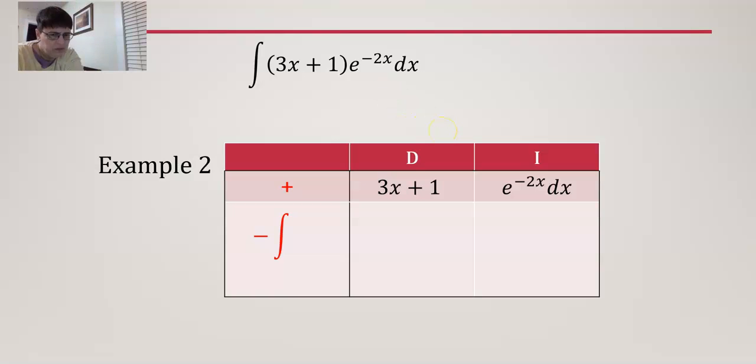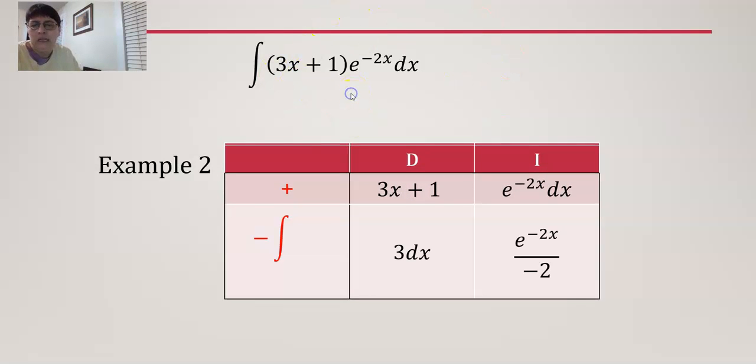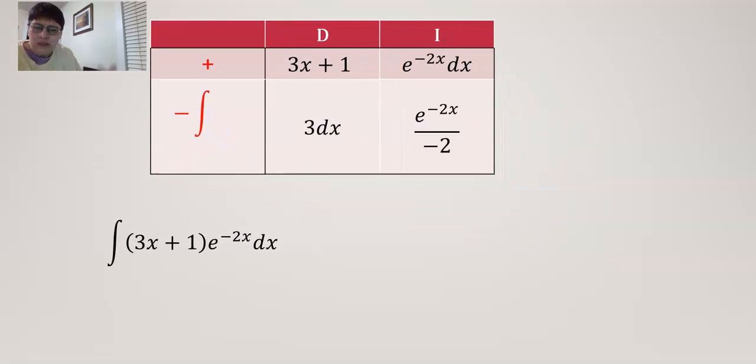So let's pull the table up. So we have the first term in the derivative column and the second term in the integration column, and that takes care of everything right there in our integrand. Derivative 3x, integral... let's see, if I took the derivative it would be negative 2, so when I take the integral it has to be divided by negative 2. Just double checking.